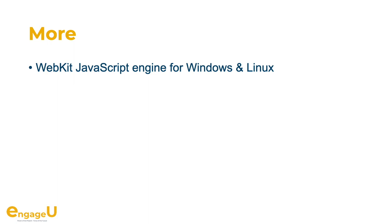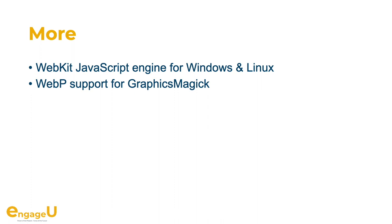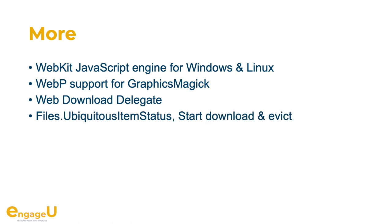The WebKit JavaScript engine functions can now be used on Windows, Linux, macOS, and iOS — you can load WebKit DLL and use it on Windows and Linux if you need more than JavaScript. We added WebP support for graphics, so you can load and write WebP image files. You can also use our web download delegate on FileMaker Pro or on Mac to monitor downloads for the web viewer. If you have users using iCloud, Dropbox, or similar services, you can ask the status of a file and ask the system to download a file or evict it if you need space. Our Excel functions were also enhanced to work with form controls so you can query and change form control properties.